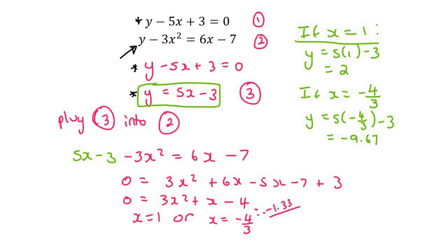Okay, so there we're done. So our final answers are the following. So when x is 1, then y was 2. Or when x was, now we can use the decimal, minus 1.33, then y was negative 9.67. And so there's the answers.